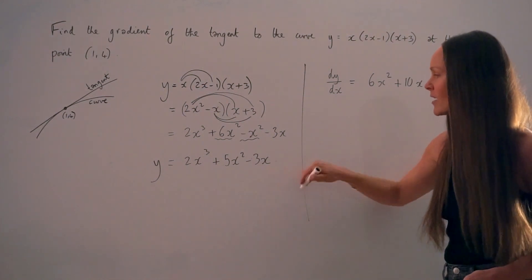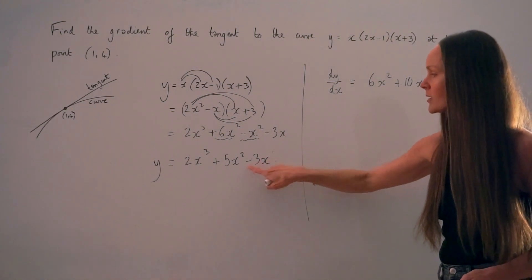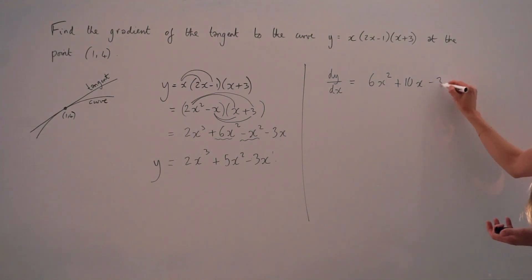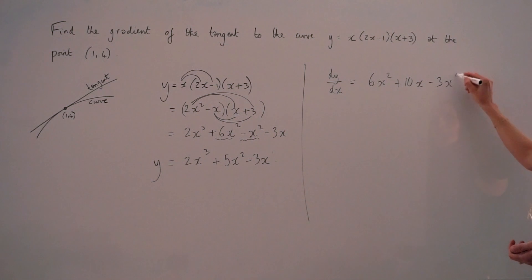Then if we look at the last term here, remember there's a positive 1 here that we don't write. So positive 1 multiplied by negative 3 is just negative 3. And if the power decreases by 1 here, we're left with x to the power of 0.